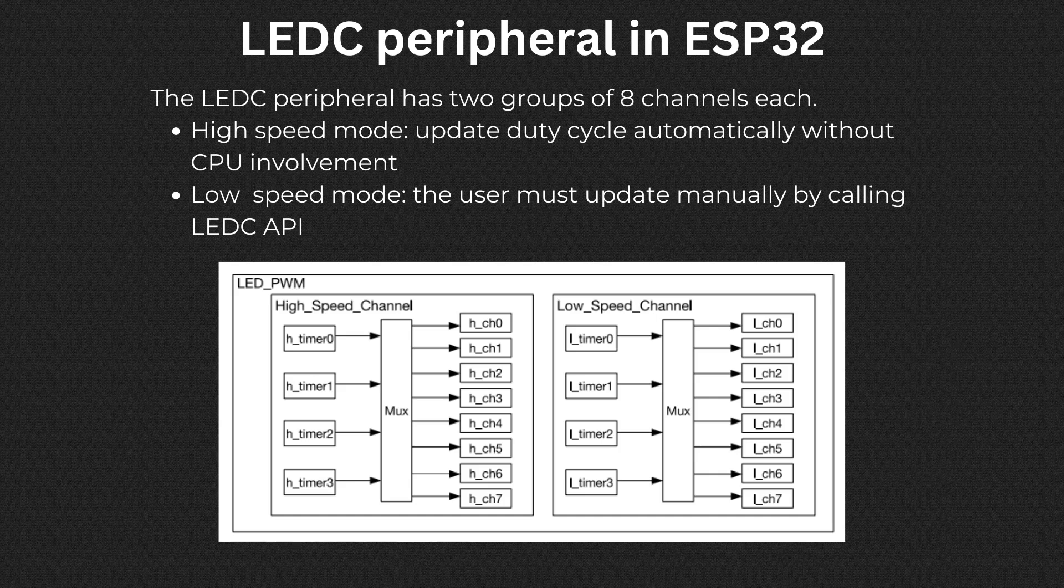The LEDC peripheral has two groups of eight channels each. One group operates in high-speed mode, which means that the duty cycle is updated automatically without CPU involvement. The other operates in low-speed mode, which means that the user must specify the change in duty cycle by using software or calling the LEDC API. This consumes CPU resources.